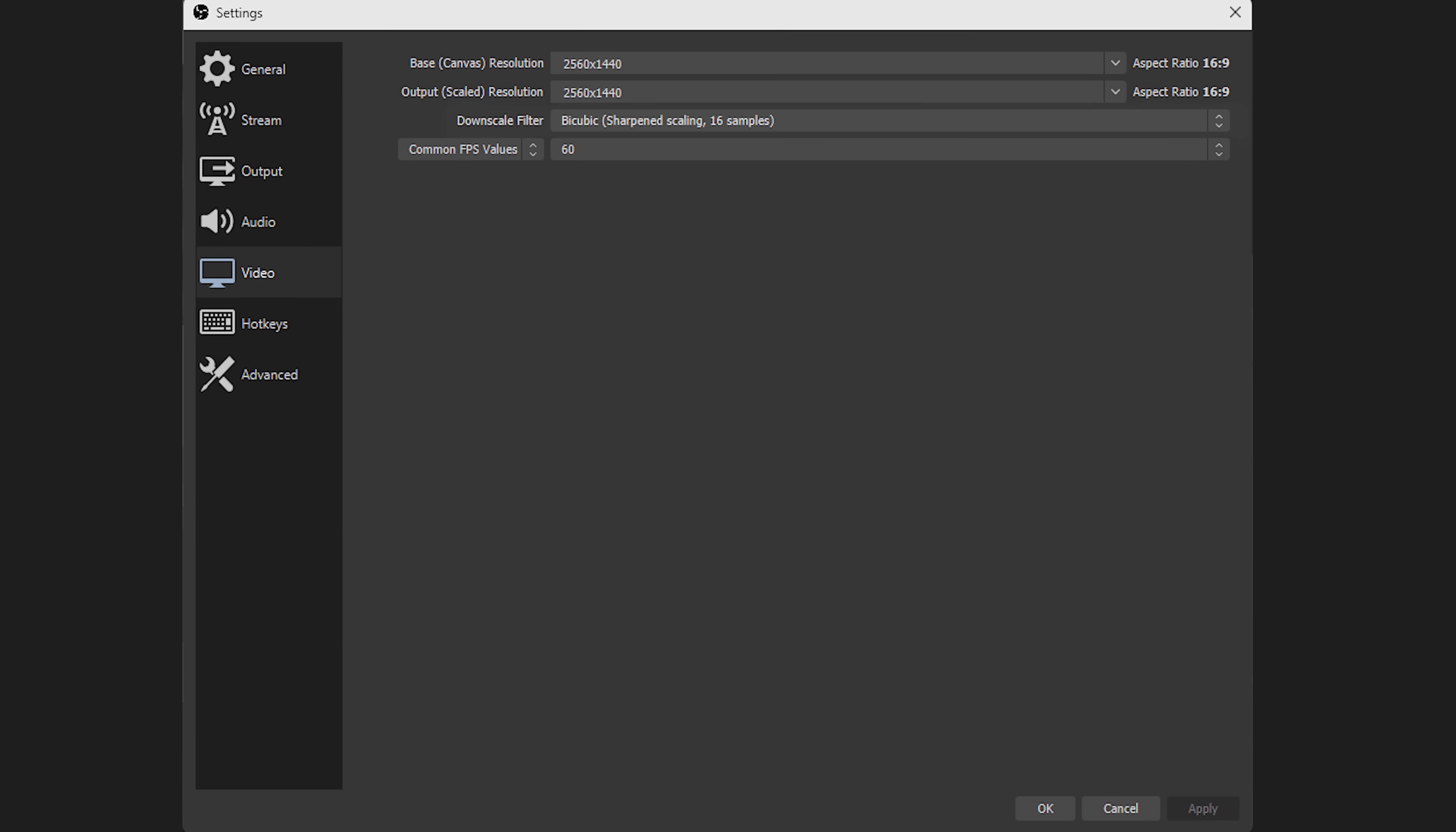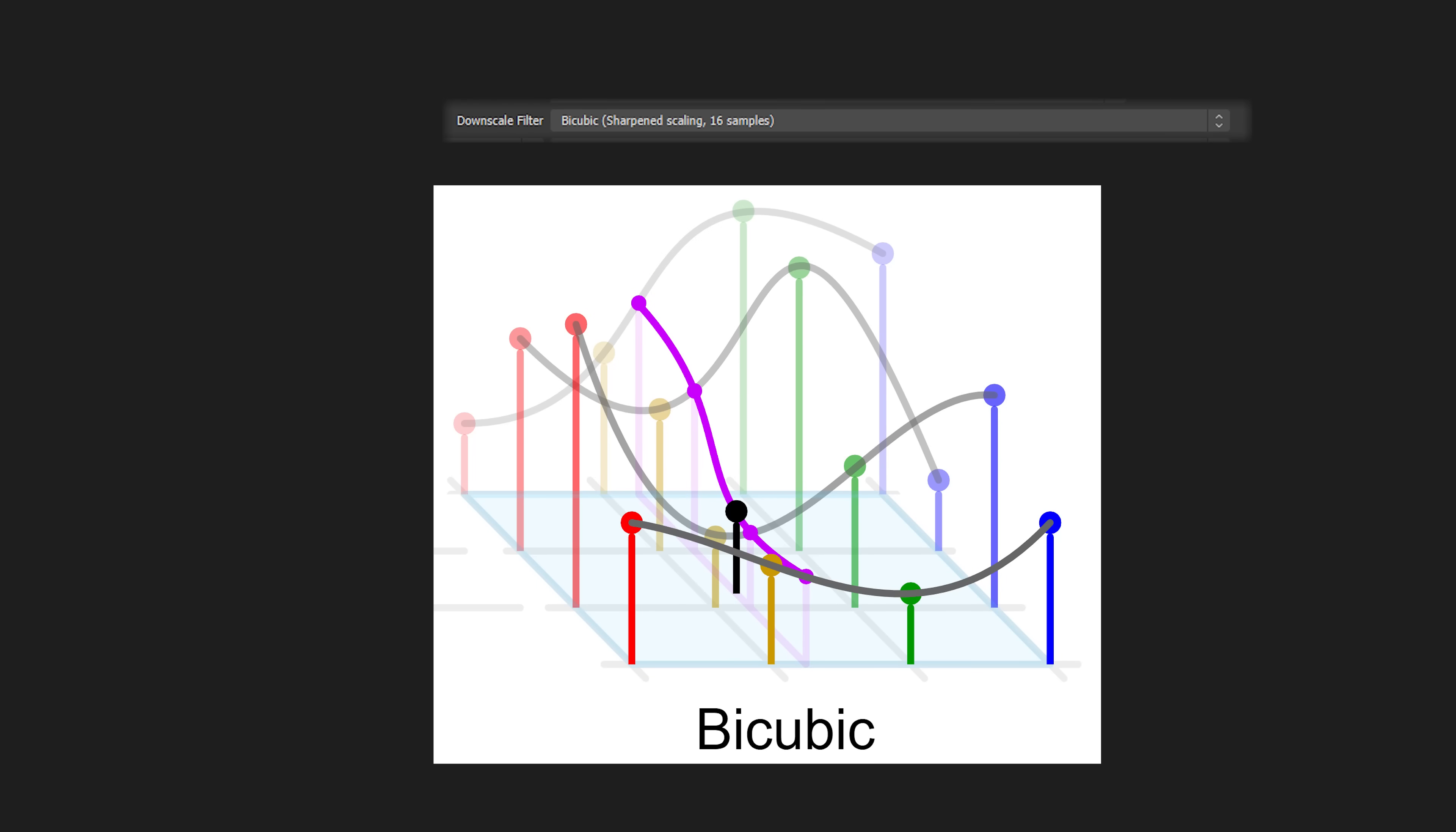Cubic interpolation and its two-dimensional variant bicubic interpolation is used all the time in computer graphics, since our eyes are not very good at distinguishing smoothness over the first derivative.